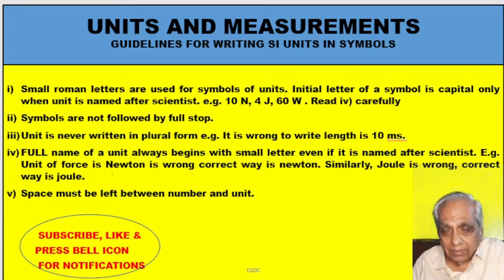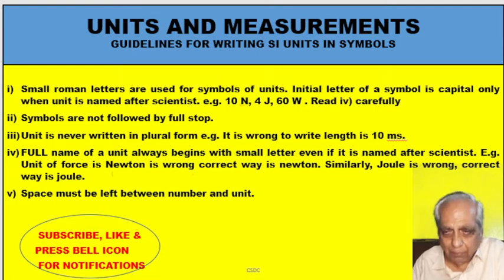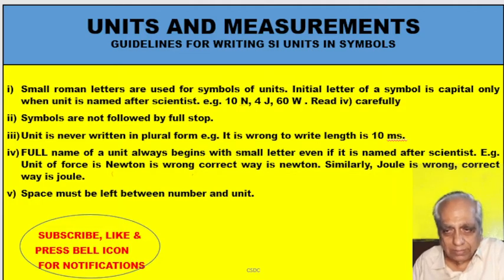But there is a subclause: in case the unit is named after a scientist, then it should be written in capital. For example, if you want to write Newton, you should write capital N. Joule is the name of a scientist, so you should write capital J. For Watt, you should write capital W.